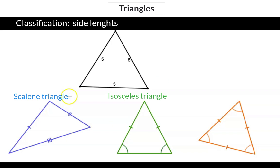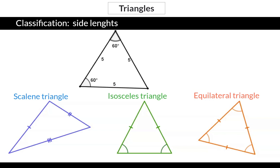The last triangle will be one where all three sides have the same length. This is called an equilateral triangle, and in such a triangle you will see that all three angles also have the same size. This size is exactly 60 degrees because the sum of the three interior angles of a triangle always adds up to 180 degrees.